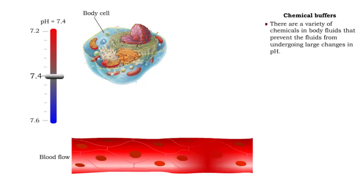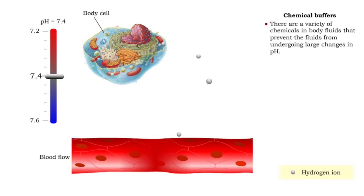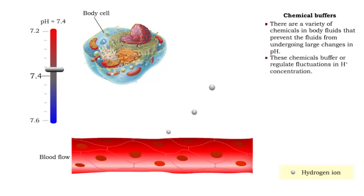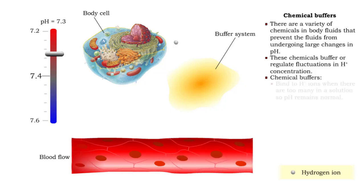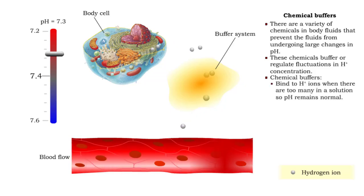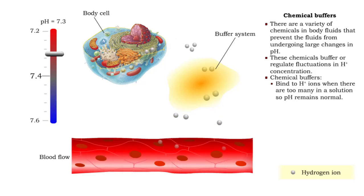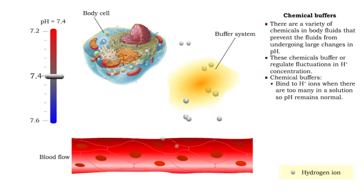There are a variety of chemicals that prevent fluids from undergoing large changes in pH by regulating fluctuations in hydrogen ion concentration. When hydrogen ion concentration increases, chemical buffers are able to bind to hydrogen ions and remove them in solution. This prevents the pH in the fluid from going down.